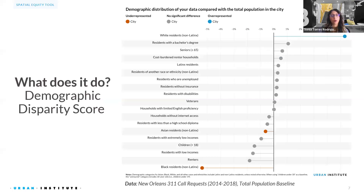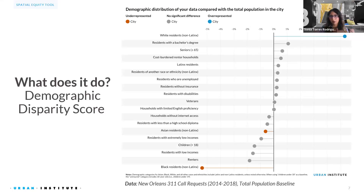The demographic disparity score helps us answer the question: across my city, county, state, or nation, which groups may have more or less access to a given resource? It compares the locations of the data points in the uploaded dataset to where different groups are in a given geography — for example, where children, seniors, veterans, Black, Asian, Latinx people, or people with disabilities live. We do this by comparing the weighted average of the location of the points in the user data to the given demographics of the tracts that a data point is in.